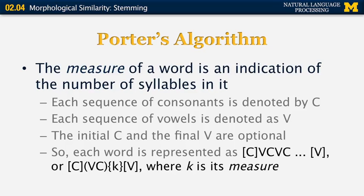One of the important aspects of Porter's algorithm is the concept of a measure of a word. A measure is a rough indication of the number of syllables in it — it doesn't measure exactly, but approximates that number. Take the simple word 'cat': thinking about it as a sequence of vowels and consonants, C is a consonant, A is a vowel, T is a consonant, giving a C-V-C sequence. For 'cats', we still count it as C-V-C because in Porter's algorithm, the number of adjacent consonants and adjacent vowels doesn't matter.